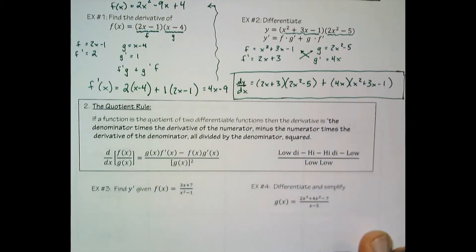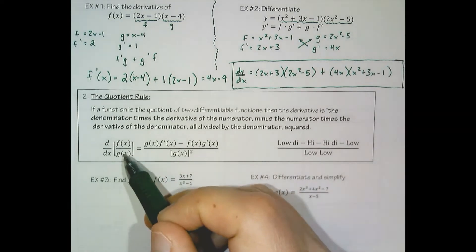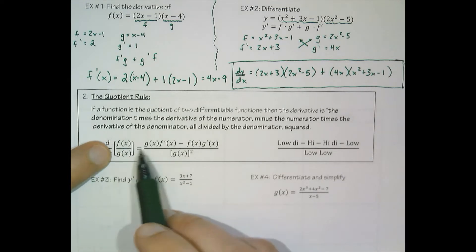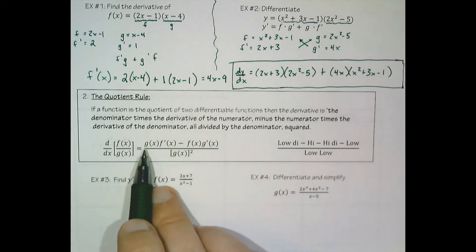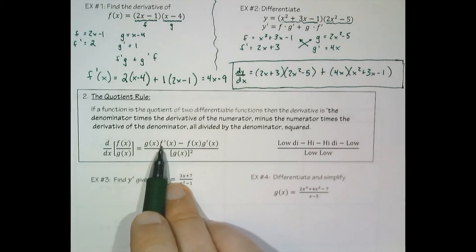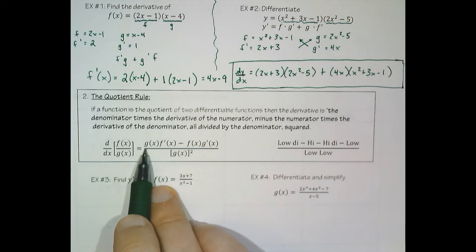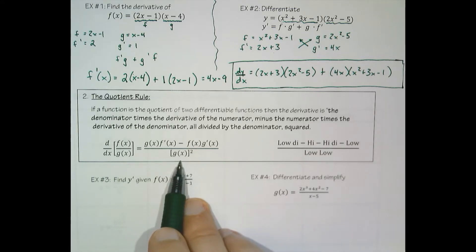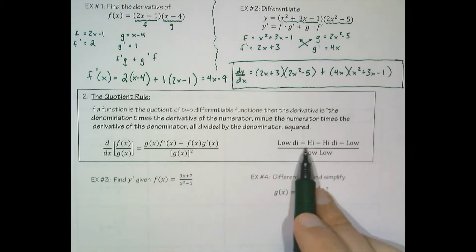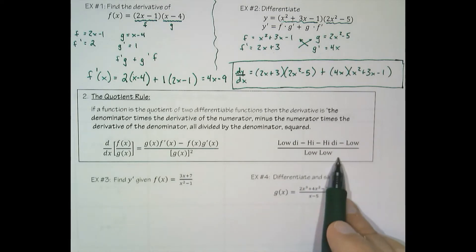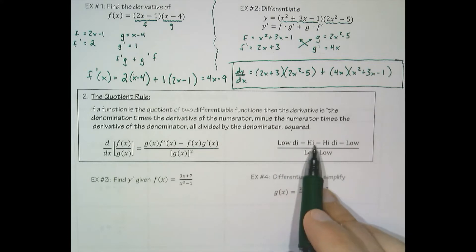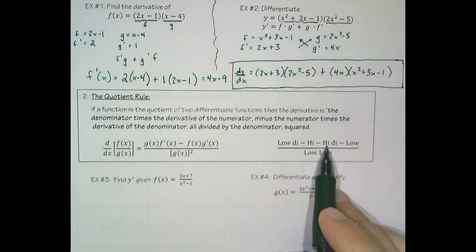The quotient rule is similar in the sense that we have two functions being divided by one another. We're going to temporarily call one of them f and one of them g. Then we write out the quotient rule as the derivative of the top times the bottom minus the top times the derivative of the bottom, all over the bottom squared. Some people like to think of this as 'low d high minus high d low over the square of what's below' or 'low d high minus high d low over low low.' This means the lower function times the derivative of the higher function, subtract the higher function times the derivative of the lower function, over the bottom squared.